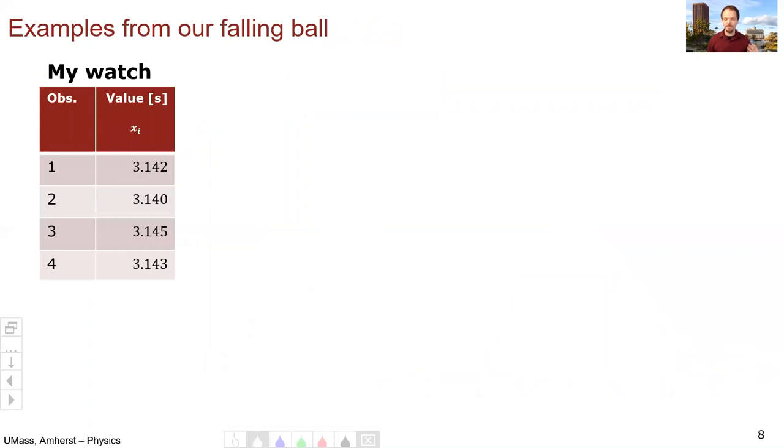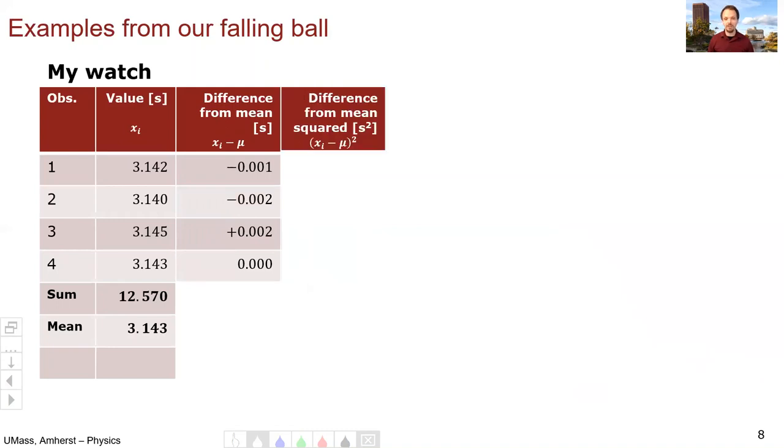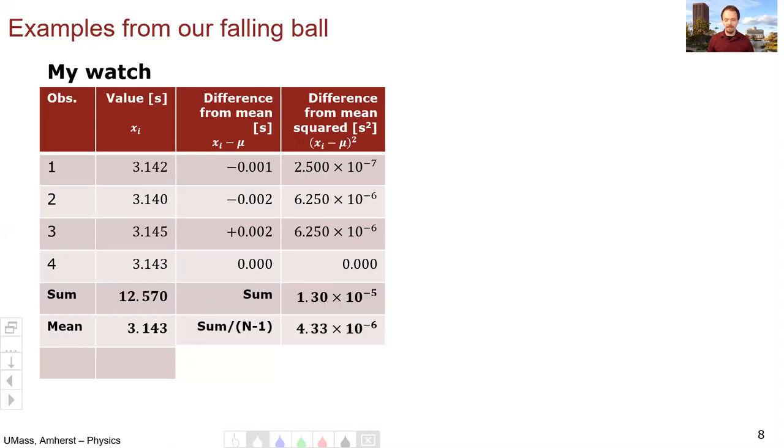So let's do an example going through all of this. Let's use the same falling ball example we used in a prior video to see how this all works. So here are my observations. Remember they bounced kind of around pi from my watch. So let's go and calculate the standard deviation. In order to do that, we first have to calculate the mean. So we add them all up and divide by four to get the mean. Then for each data point, we go through and calculate the difference from the mean. So 3.142 minus 3.143 gives us minus 0.001. And we repeat that for all the numbers. Then we take each value and squared. So minus 0.001 squared is 2.5 times 10 to the minus seven. Then we repeat that for all the values. Then we add them up. Then we divide by n minus one, which in this case is three. And then we take the square root to get the standard deviation.